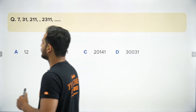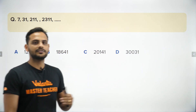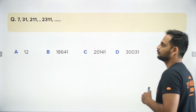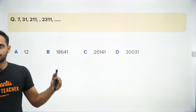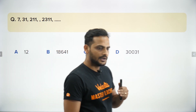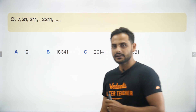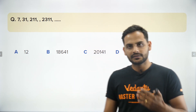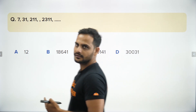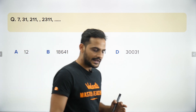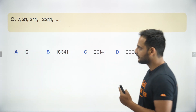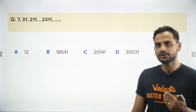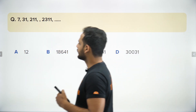So here, 7 then 31 then 211 then 2311 — it's not making any obvious sense. These numbers are growing with a huge margin, so definitely either the cube of something or a multiplication pattern is used. It's not a direct multiplication because 7 and 31 are not related directly. So you have to think about how to get from 7 to 31, and then from 31 to 211.